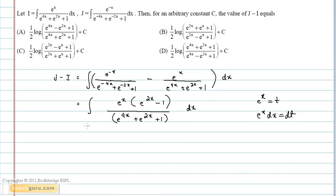Therefore, this simplifies to integral t square minus 1 divided by t power 4 plus t square plus 1, dt.